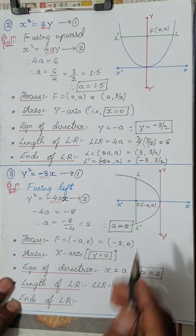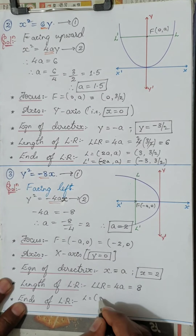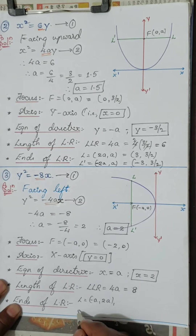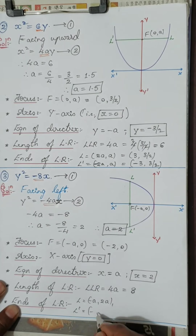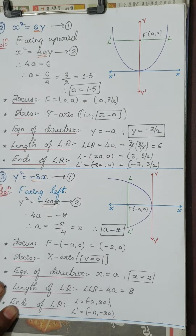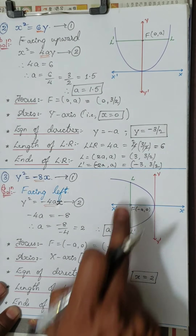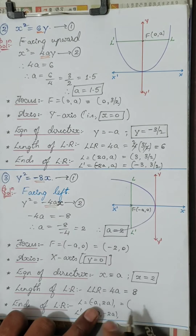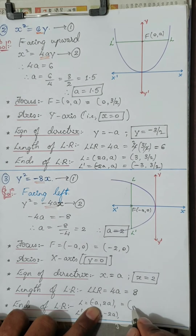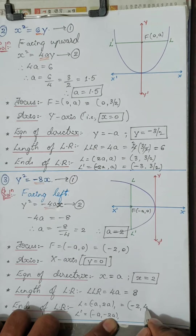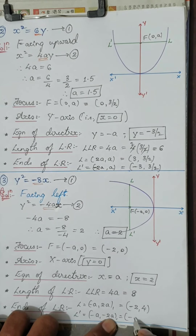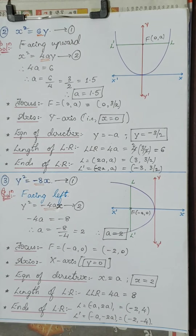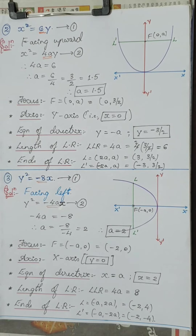The ends of the latus rectum for a left-facing parabola are L = (-a, 2a) and L' = (-a, -2a). With a = 2: L = (-2, 4) and L' = (-2, -4). That is all for question number 3 — it is entirely formula-oriented, so you can easily score marks.